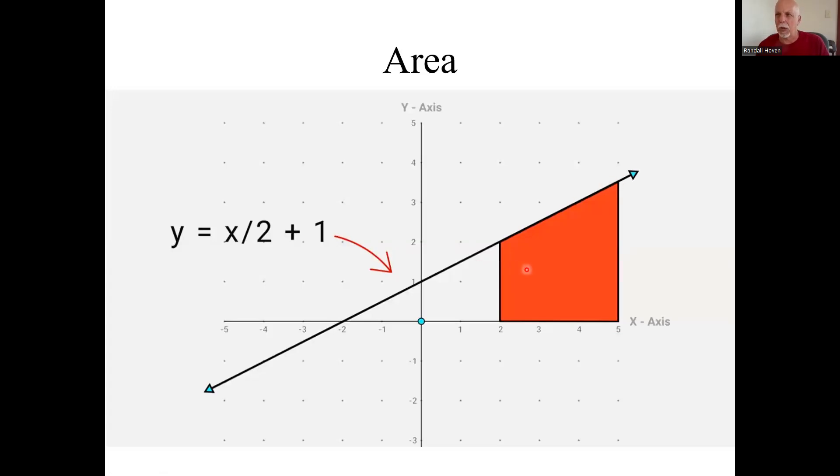Area would be this trapezoid. And you can calculate it a couple ways. It's the area of this rectangle plus the area of this triangle. You know those formulas. Anyway, you get a note, we can calculate slope and area for straight lines. It's pretty straightforward.